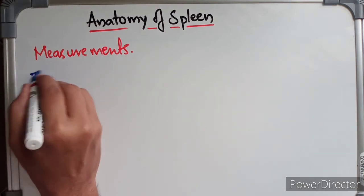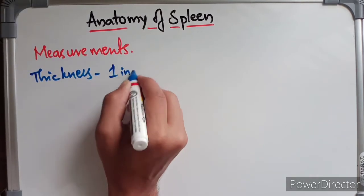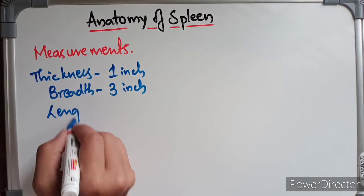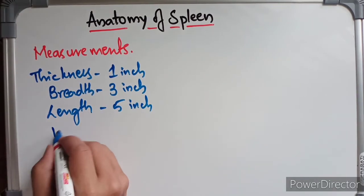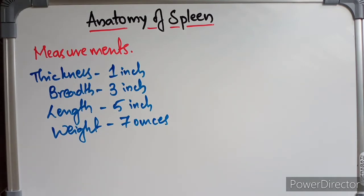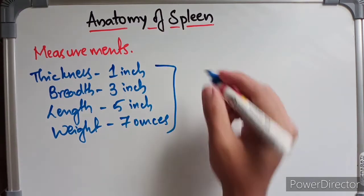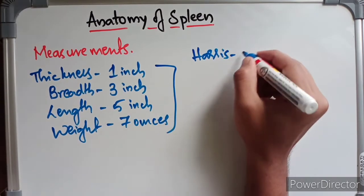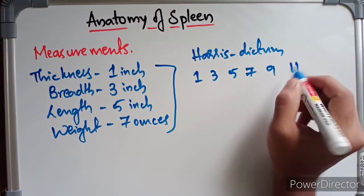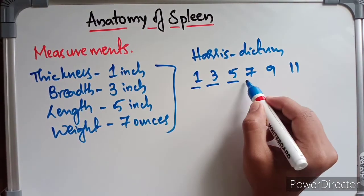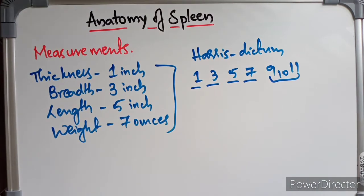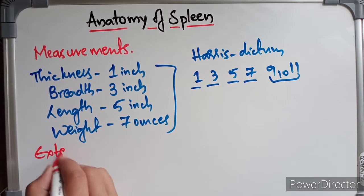The measurements of the spleen: thickness is one inch, breadth is three inches, length is five inches, and weight is seven ounces. This is remembered by Harris's dictum of odd numbers — one, three, five, seven — and it lies along the 9th, 10th, and 11th ribs, adding nine and eleven to the sequence.